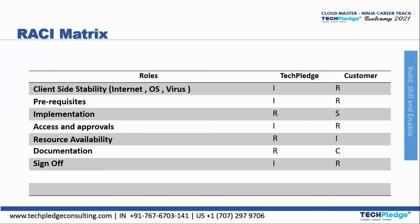For resource availability, before the project plan kicks off, tech place should confirm whether resources are available — responsibility is tech place's and the customer is to be informed. For documentation, the responsibility of tech place is to provide documentation during handover, but the customer needs consultation about it, so consult is the customer's role. For sign-off, tech place is informed but the responsibility is the customer's. This is the RACI matrix, where 'S' also comes into picture representing a supportive role.